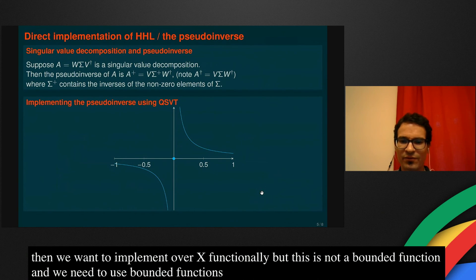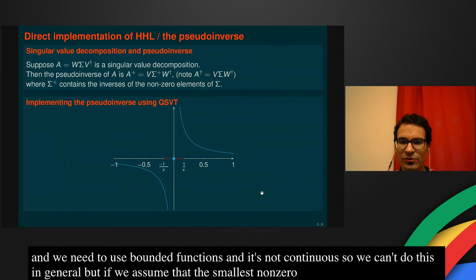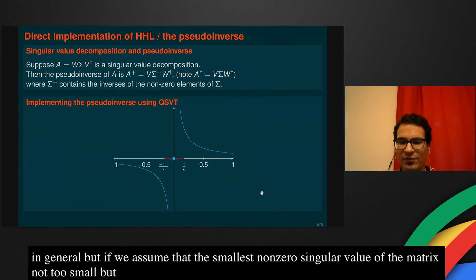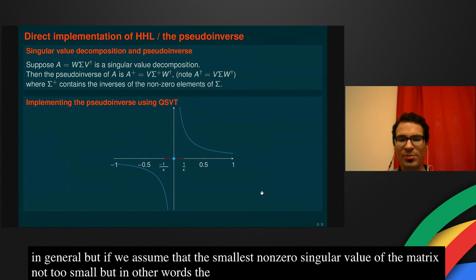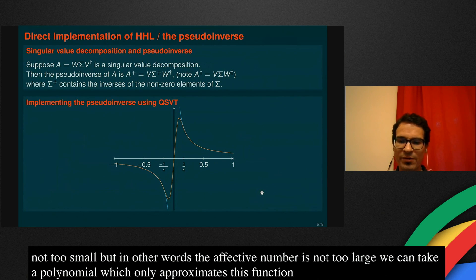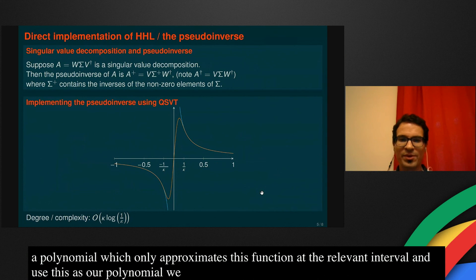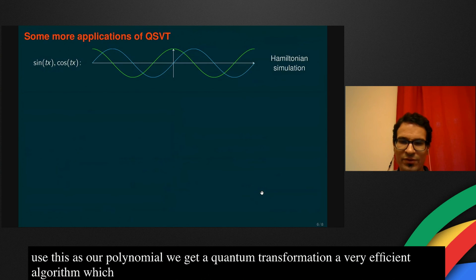But if we assume that the smallest nonzero singular value of the matrix is not too small, in other words, this effective condition number is not too large, kappa, then we can just take a polynomial which only approximates this function at the relevant interval, about one over kappa, and then use this as our approximating polynomial. And then we get, by our quantum singular value transformation, a very efficient algorithm, which has logarithmic dependence in error and all sorts of nice features.